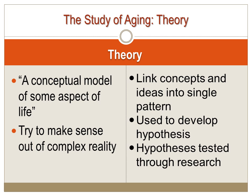Scientists try to develop theories that produce testable hypotheses. These hypotheses then guide scientists in their work of research. Social scientists formulate studies to test their hypotheses to see whether their hypotheses are confirmed, rejected, or they need to modify the theoretical aspect of the study.